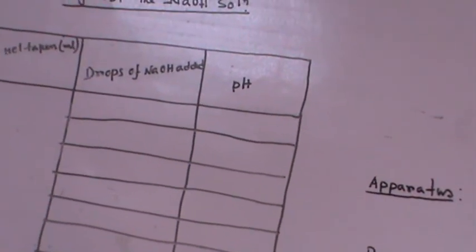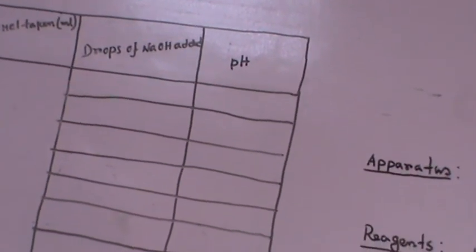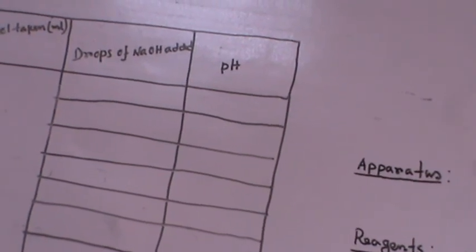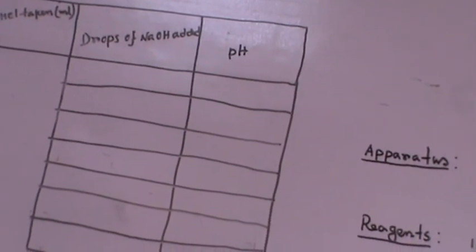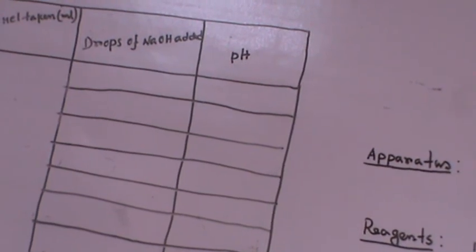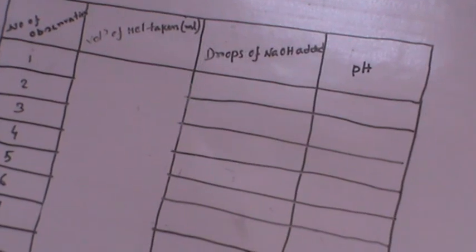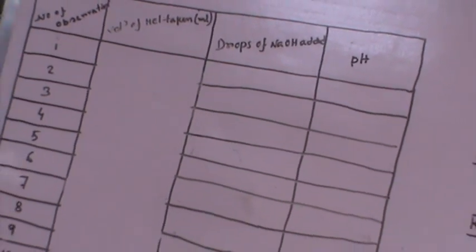From there we calculate each time what will be the pH of the solution. And when the sharp rise in the peak will come, we will understand the equivalent point is there, that is the neutralization has been done. So this is the normal working procedure for the experiment.